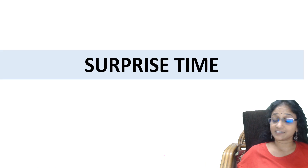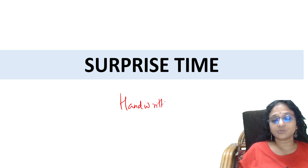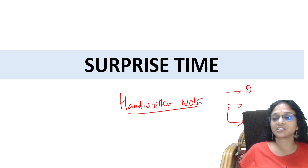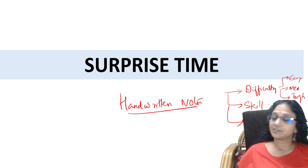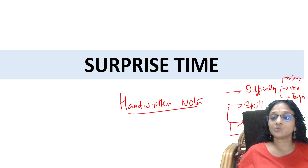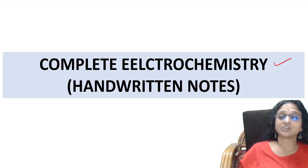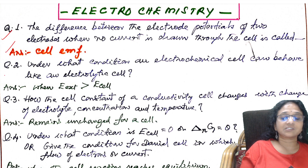Now surprise time! I am going to send you handwritten notes. In my handwritten notes, I particularly concentrate on three things: first, difficulty level - whether the exam question is easy, medium, or tough type. Second, skill-based questions. Third, application-based questions. I will also include HOTs questions. Today I'm going to give you handwritten notes of complete electrochemistry. This is how my handwritten notes look - question is given, answer is here, question, answer, like that.